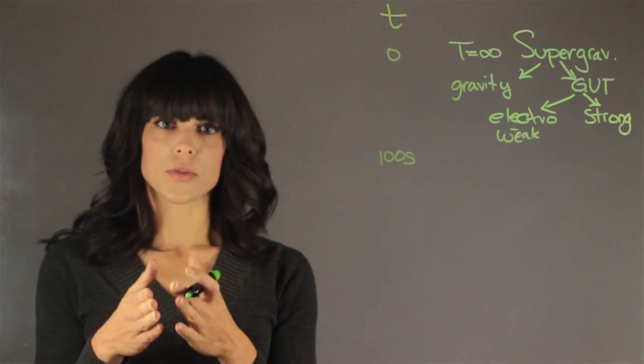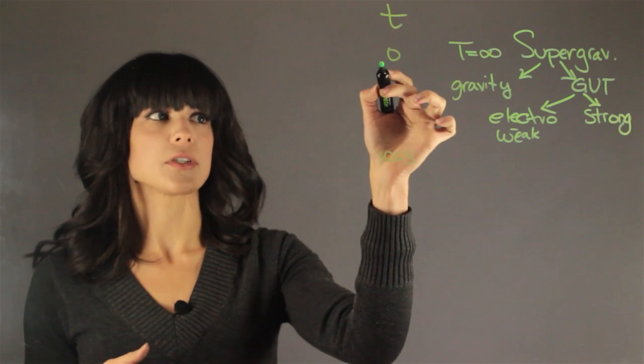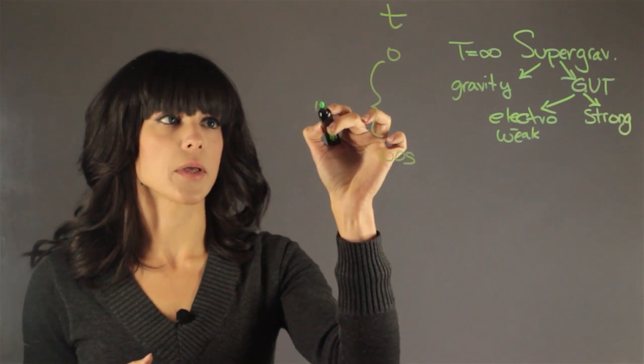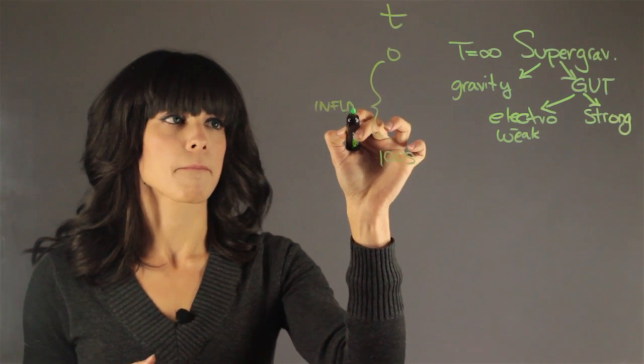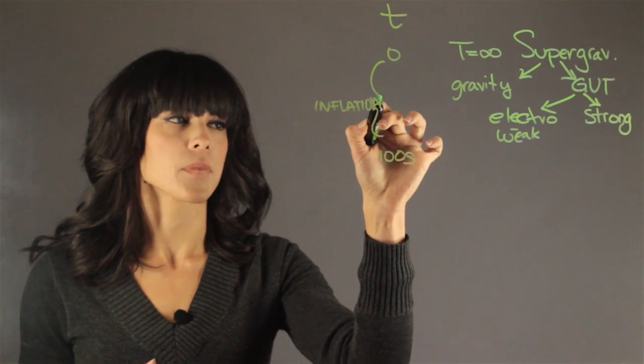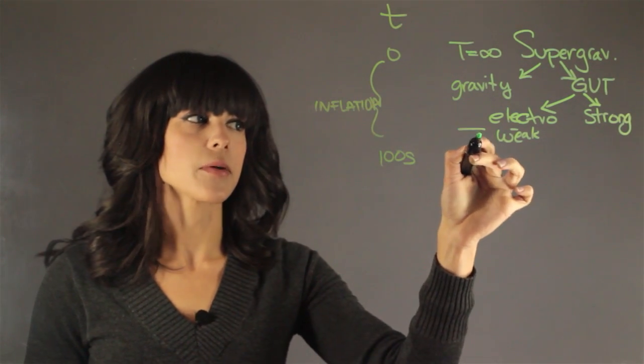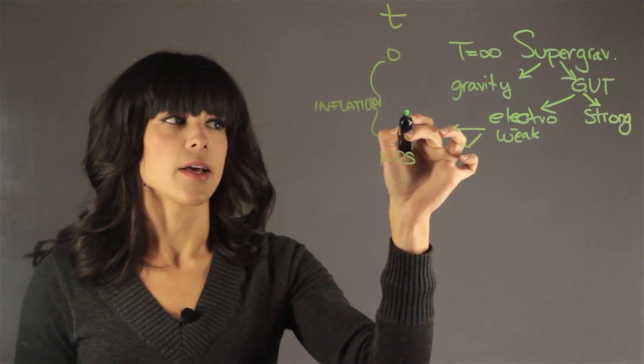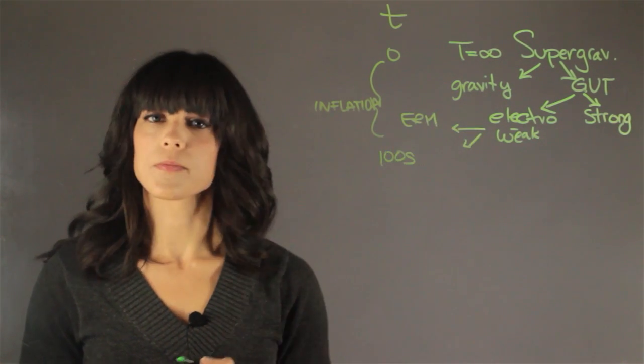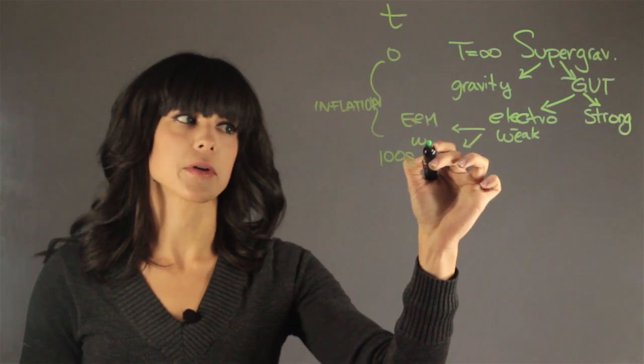And once we go through this period of inflation, it's called inflation. At the end of inflation, what we have is the electroweak now splits into two. And then you have electricity and magnetism force, and then you have your weak force.